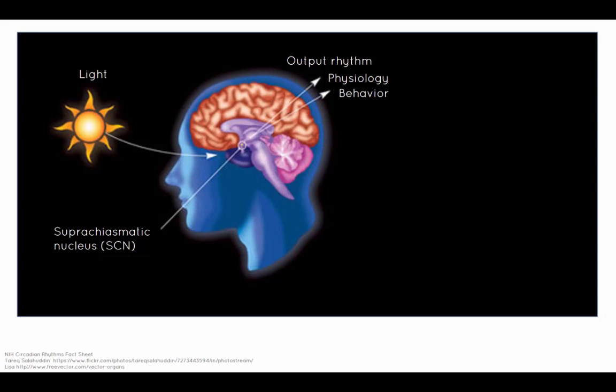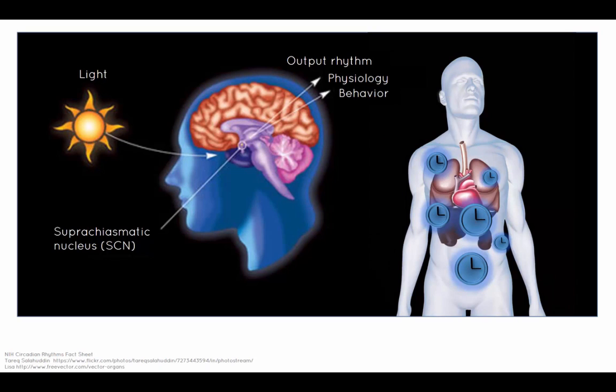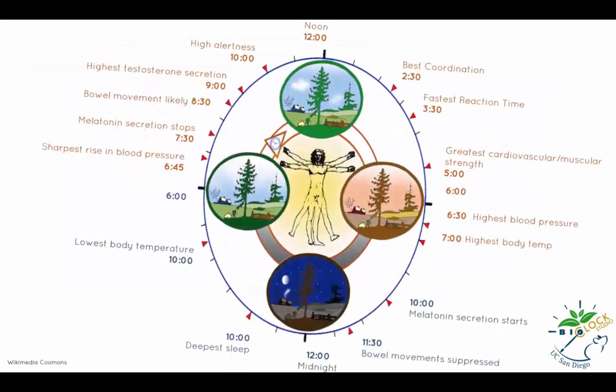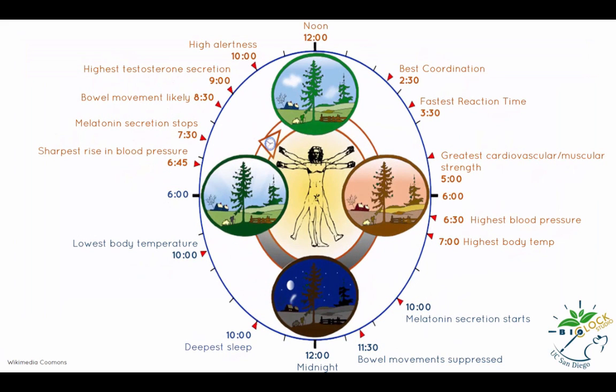As it interprets the information from the retina, the SCN is adjusted to environmental light-dark cycles, and in turn, either directly or indirectly coordinates the peripheral clocks that reside in almost all tissues and organs of the mammalian body. Mammals can anticipate the environmental cycles of the day and optimize their behavior and physiologies.